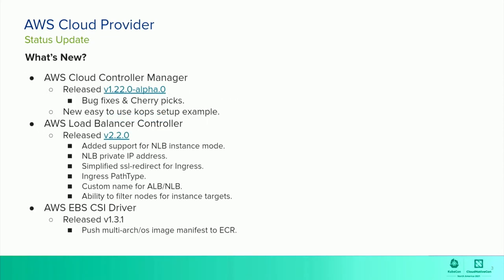What's new? The AWS Cloud Controller Manager has a new release, 1.22.0-alpha.0, which is comprised of mostly bug fixes and cherry picks. There's also a KOPS setup example on the repo now, which is a great way to get started and get a feel for what is required to run the Cloud Controller Manager in a cluster. The AWS Load Balancer Controller recently released version 2.2.0, which added a number of awesome features — take a look at that release on GitHub if you're interested.